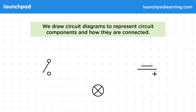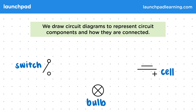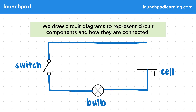First we have simple symbols to represent different components. From the previous circuit, we'd use these two lines and a plus symbol to represent the cell, a circle with a cross for the bulb, and two circles with a line for the switch. Then we'd draw lines between the components to represent the wires connecting them. This shows us what order the components are in and also that we have a clear closed loop around the circuit.